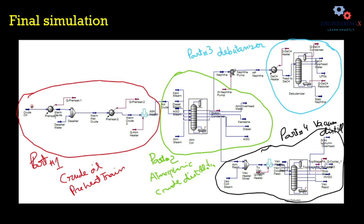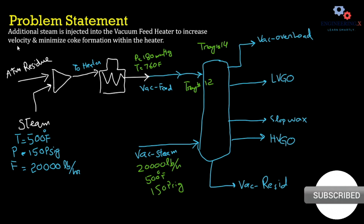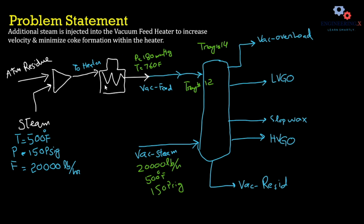Let's move to the problem statement. Here we have a simplified flowsheet. The atmospheric residue is mixed with steam to increase the fluid velocity. If we do not increase velocity, this thick fluid will start to burn in the heater and develop coke formation inside the tubes, reducing heat transfer efficiency and potentially causing accidents. To avoid tube choking, we introduce high-velocity steam.